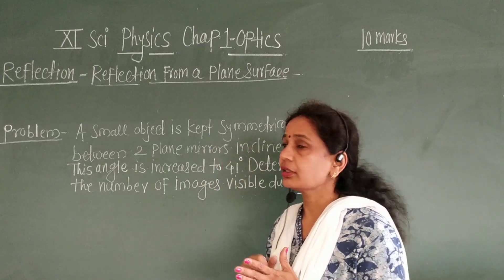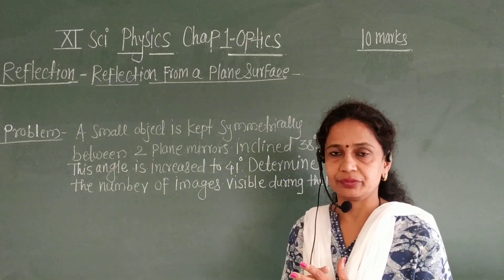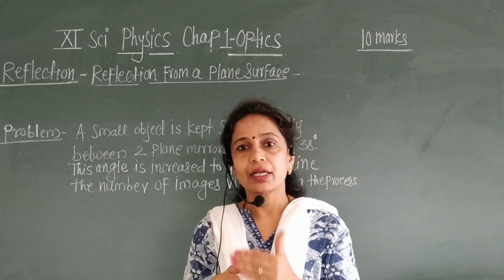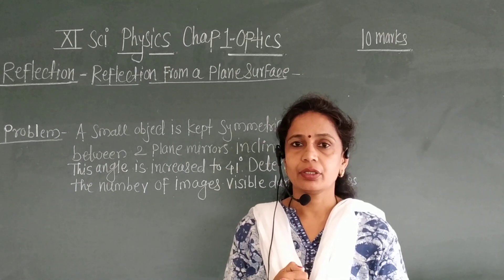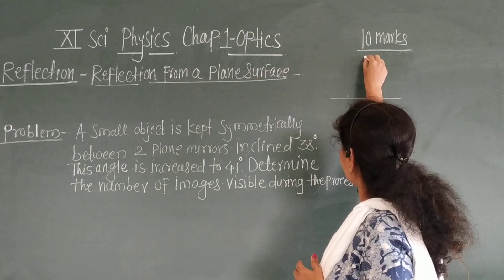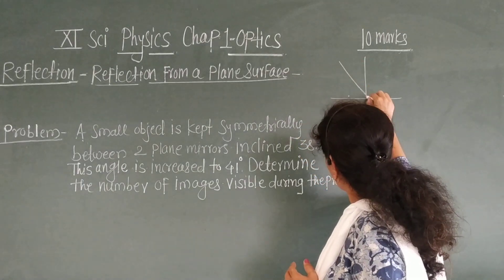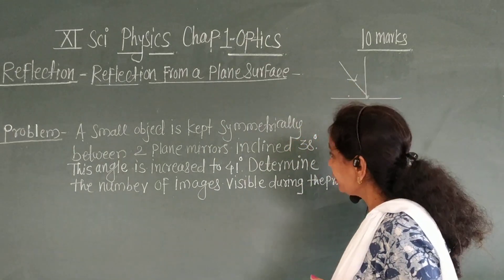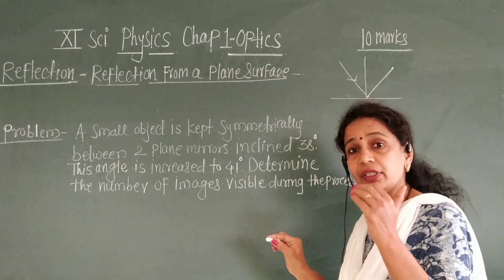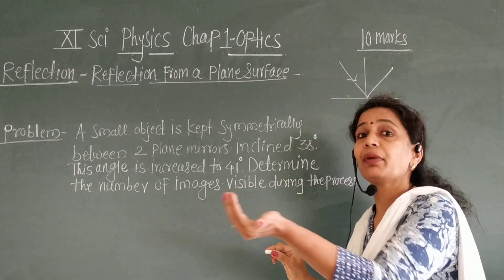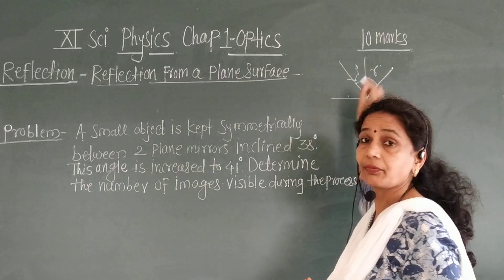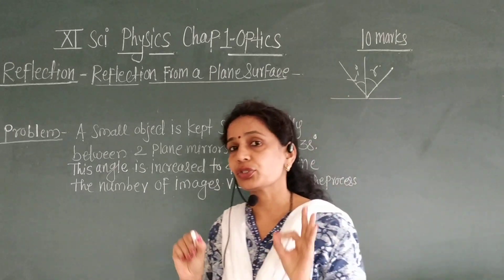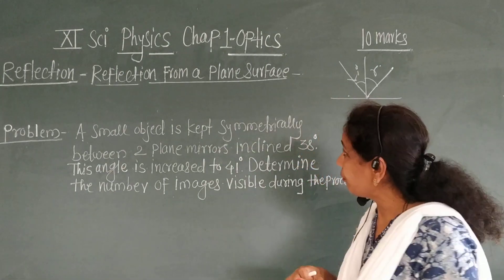First, let us see reflection. What is reflection? Reflection is derived from a Latin word meaning 'bending back.' When light is incident on a plane reflecting surface such as a mirror or polished surface, it bounces off that surface at the same angle. This angle is the angle of incidence, and this is the angle of reflection — that is the definition of reflection.